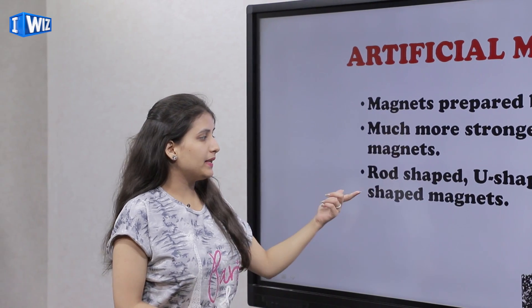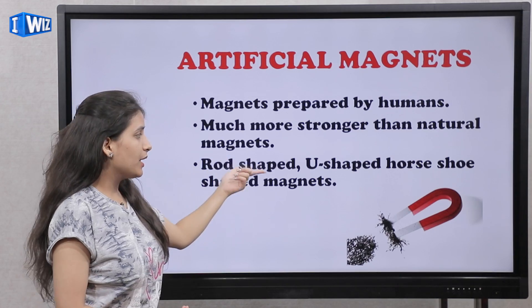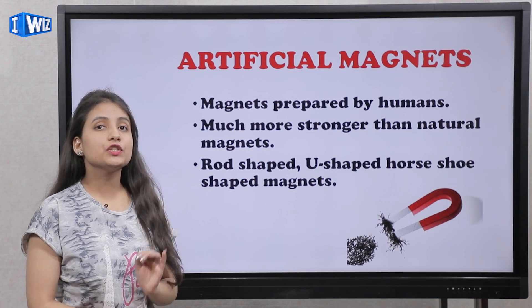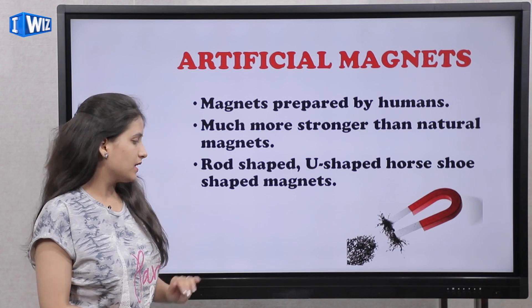For example, the rod-shaped, U-shaped, and horseshoe-shaped magnets are types of artificial magnets.